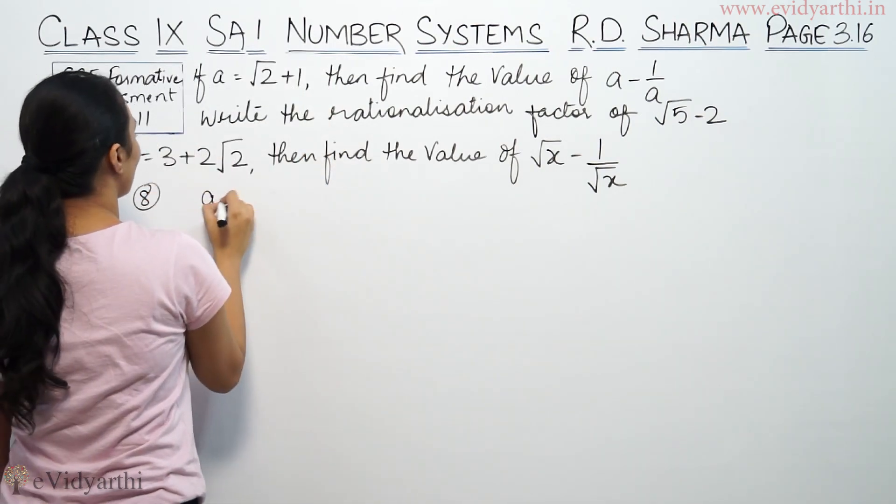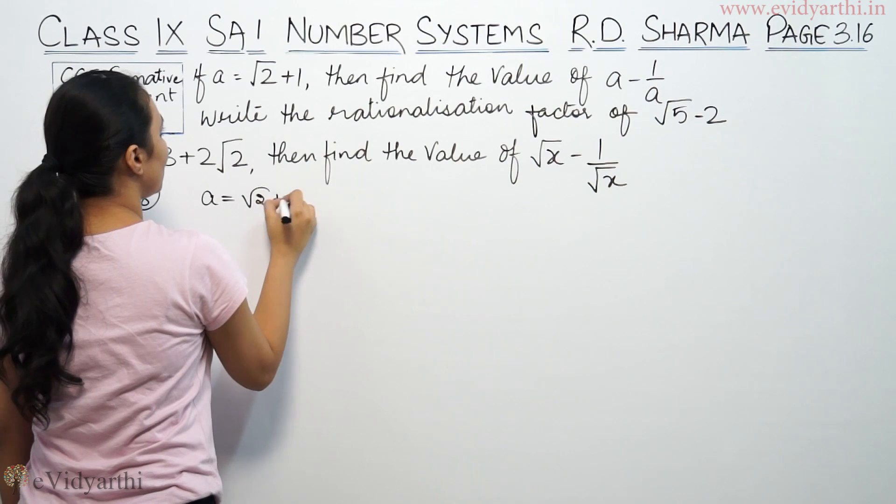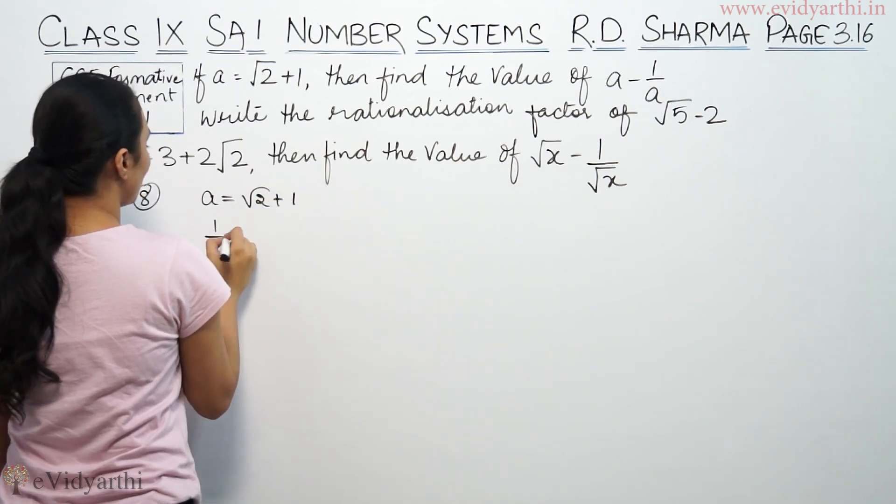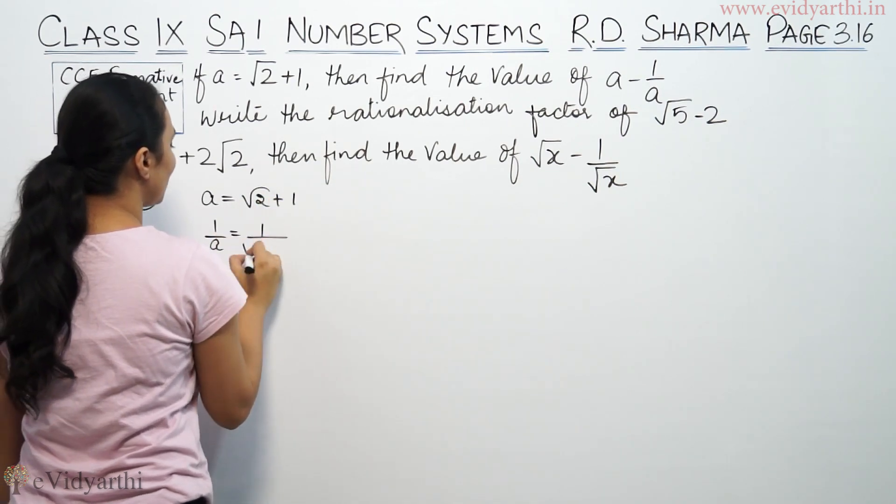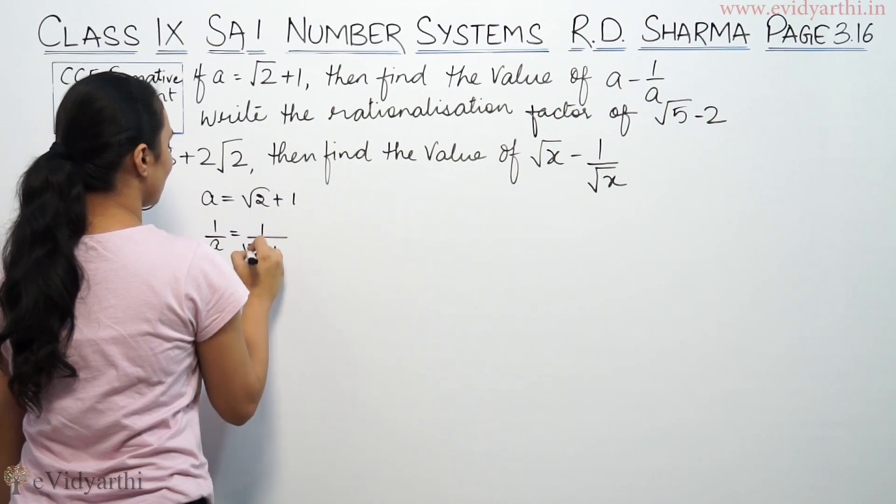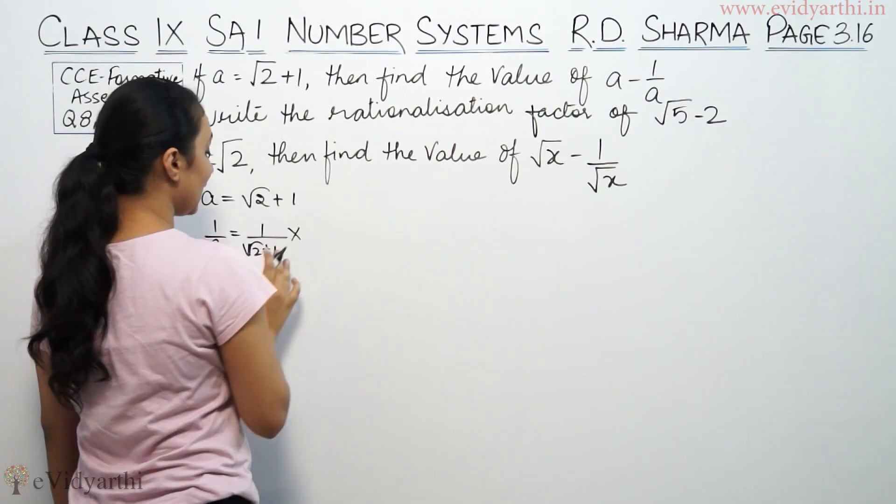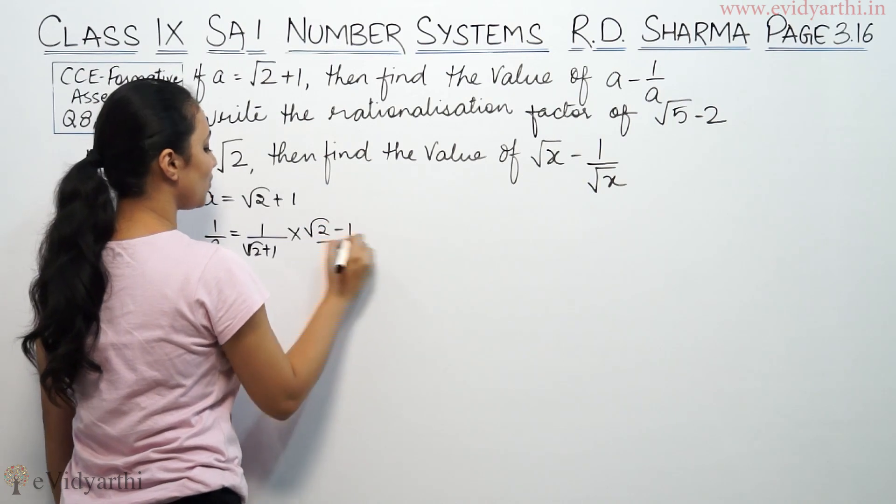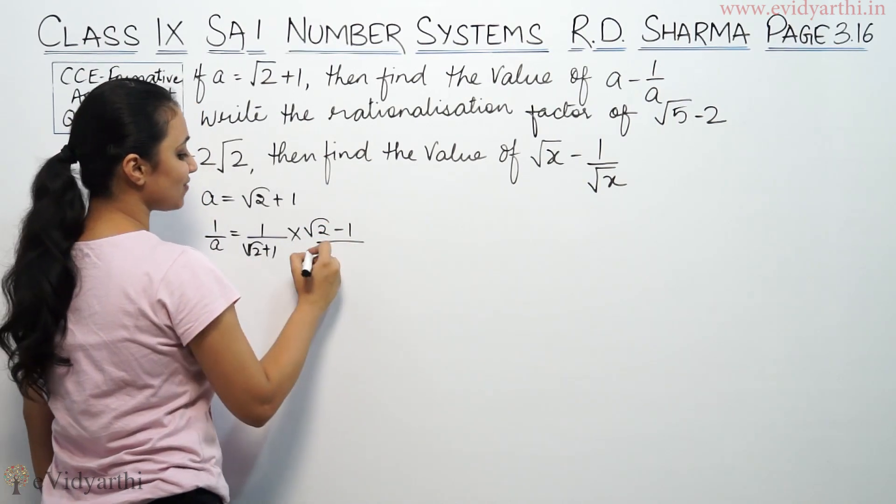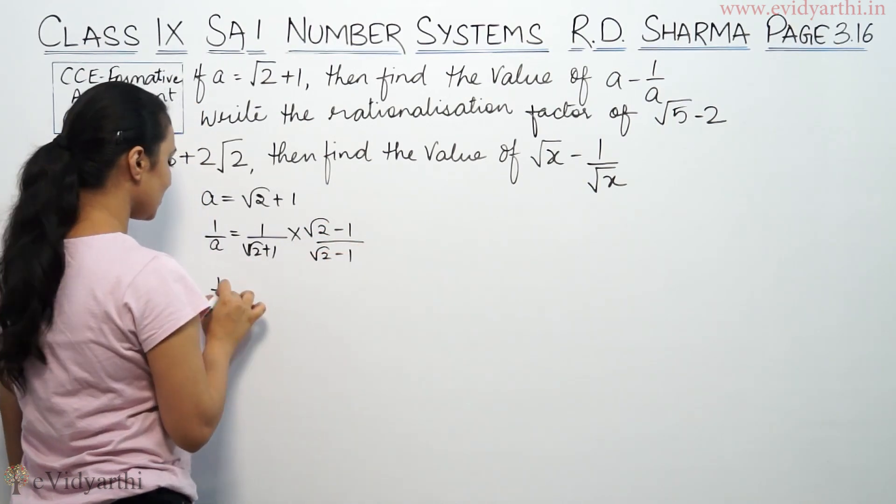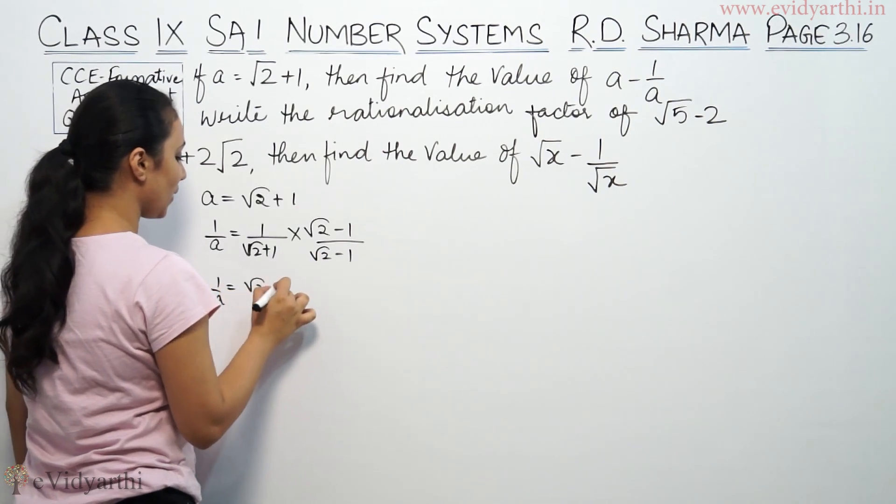So in question 8, you have a value given as root 2 plus 1. So 1 by a will be equal to 1 upon root 2 plus 1. Now we will rationalize using root 2 minus 1, same digits, just sign change.